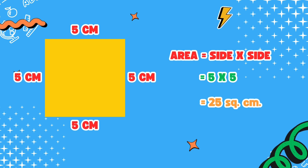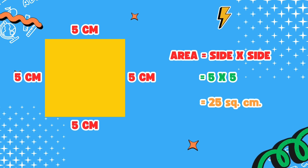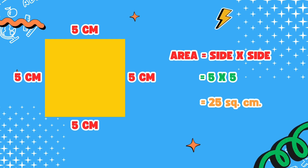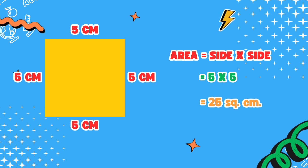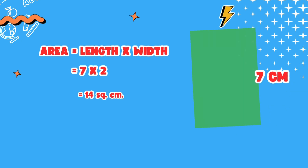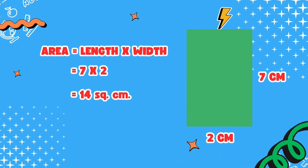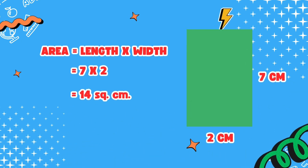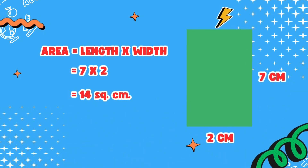The area of the square is 25 square centimeters, while the area of the rectangle is 14 square centimeters.